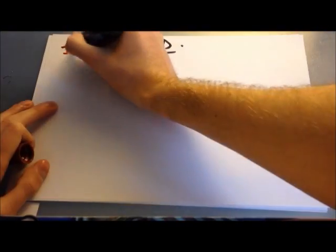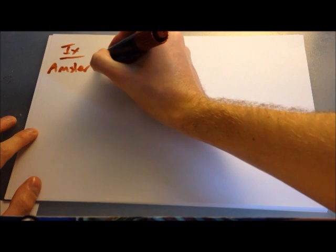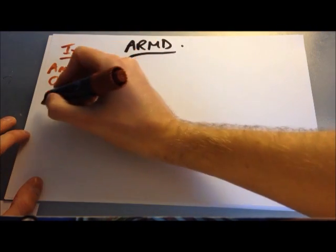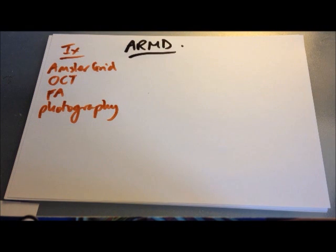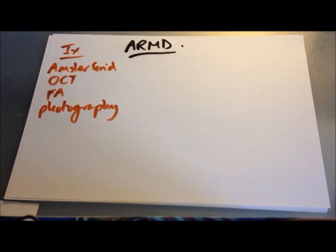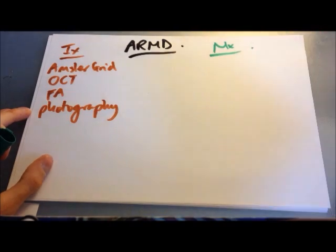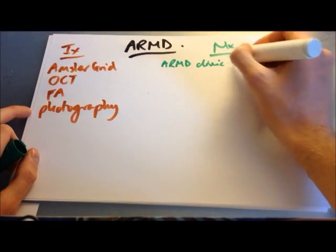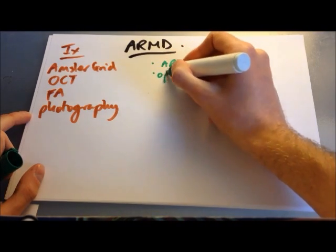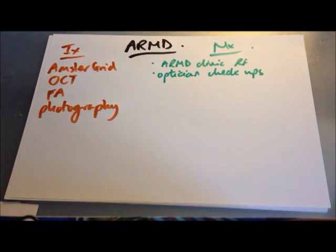Investigations for AMD include: an Amsler grid which the patient can complete daily to identify metamorphopsia or scotomas; optical coherence tomography, which is almost like an ultrasound looking between the layers at the back of the eye for drusen or haemorrhage; fluorescein angiography, particularly useful in wet neovascular AMD; and retinal photography, used to compare how the condition is progressing, often done by optometrists.